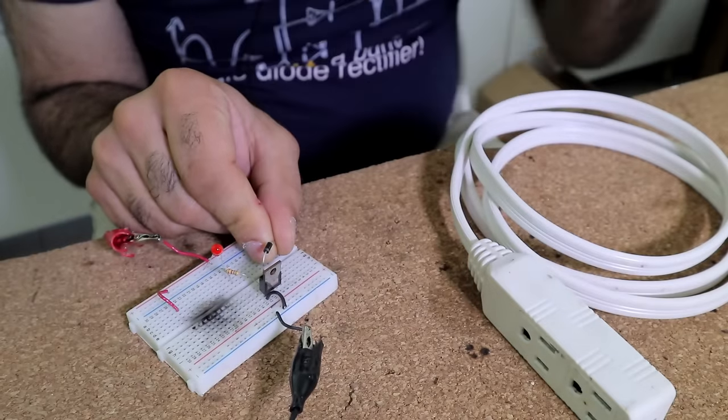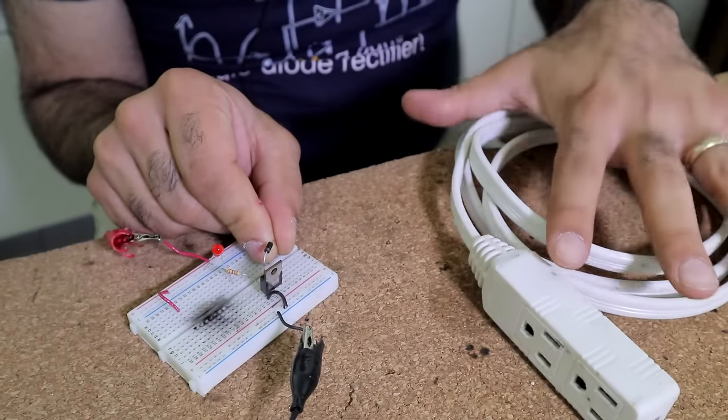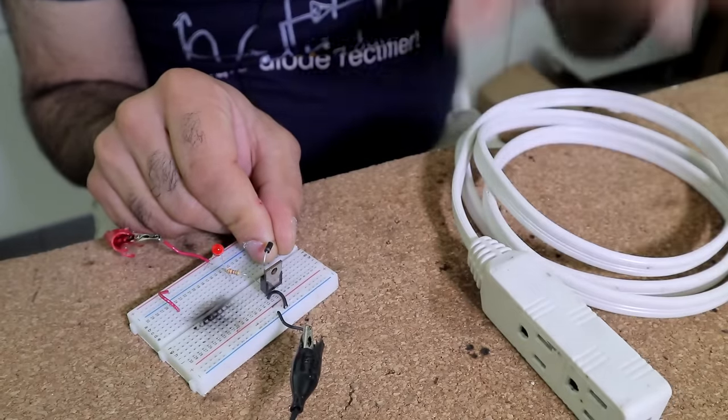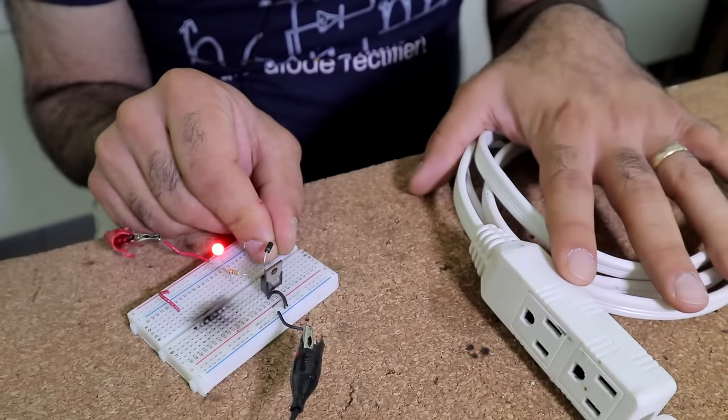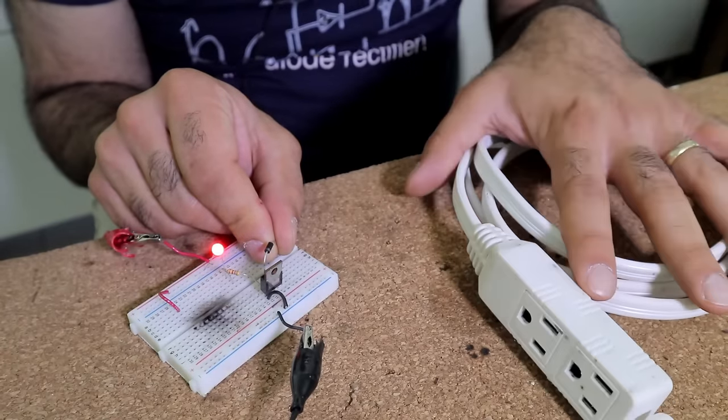Here we are. When I touch the input, the LED doesn't turn on unless I bring my hand close to some extension cord. See? This is an example of electromagnetic interference. In this case, it's only electric, not magnetic.